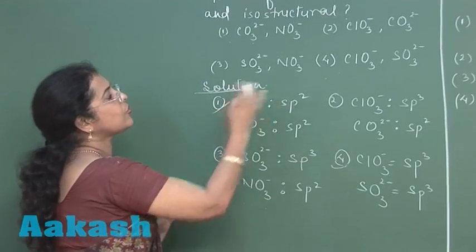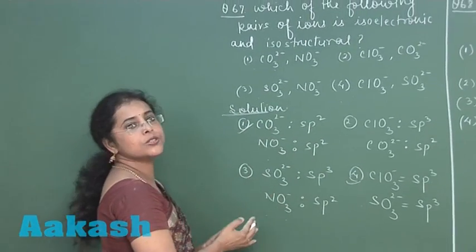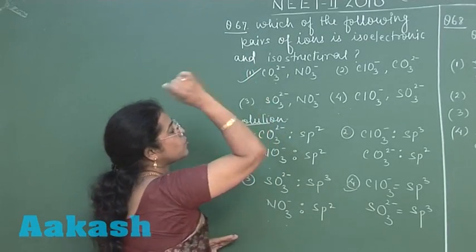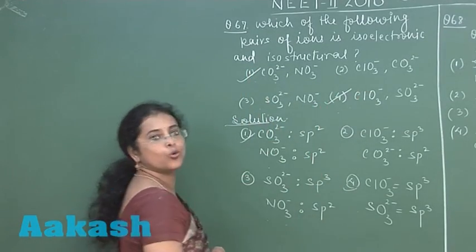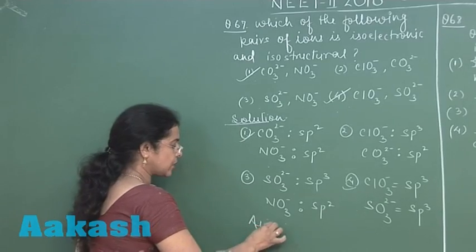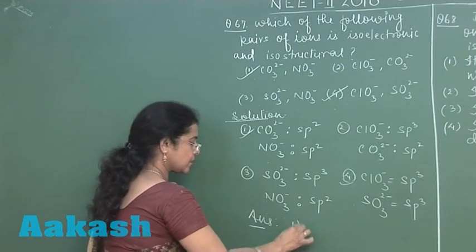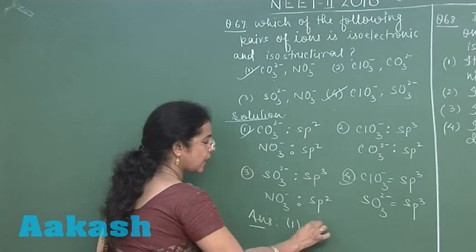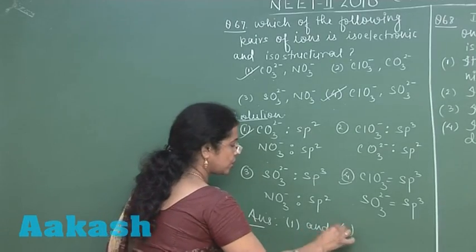It means in the given question two options are correct, option 1 and option 4. So answer of this question is option 1 as well as option 4.